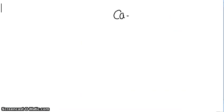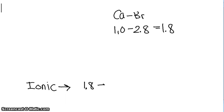You have CaBr is 1.0 minus 2.8, which gives you 1.8. And for your ionic bonds, if the electronegativities range from 1.8 and up, then it is an ionic bond. This is 1.8, therefore, CaBr is an ionic bond.